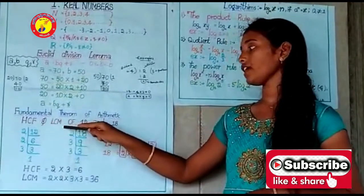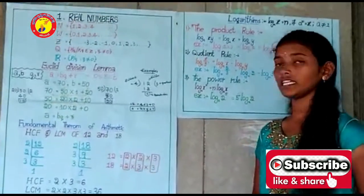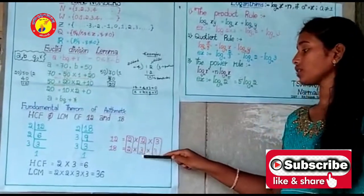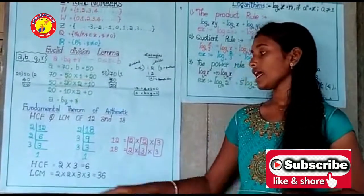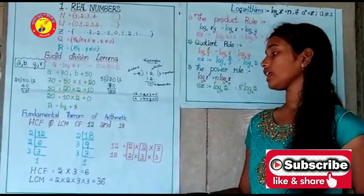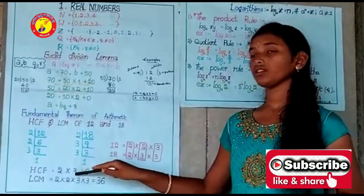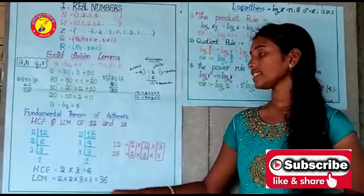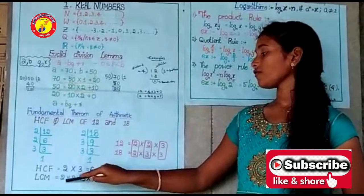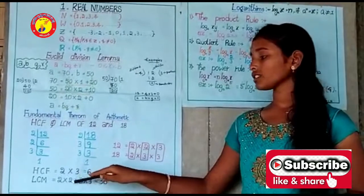Find the HCF and LCM of 12 and 18. Do prime factorization: 12 = 2 × 2 × 3 and 18 = 2 × 3 × 3. For HCF, take the common factors: 2 and 3, so HCF = 2 × 3 = 6. For LCM, take common factors and remaining factors: 2 × 2 × 3 × 3 = 36. So LCM is 36.